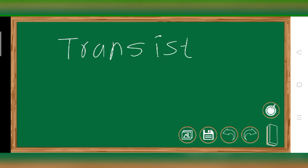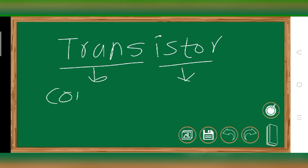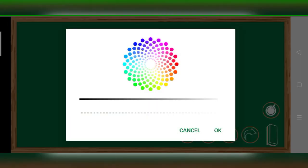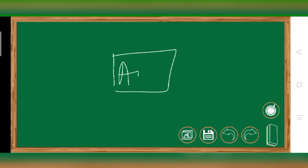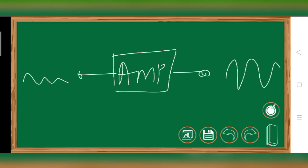Now I'll explain the definition of transistor in detail. The word transistor: 'trans' means to conduct, and 'istor' means resistance. Since JFET, BJT, and MOSFET are all transistors, the basic task of a transistor is amplification. The amplifier has its own internal impedance and external impedance.